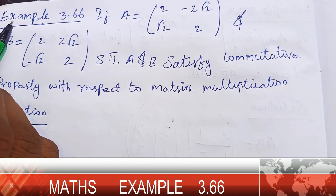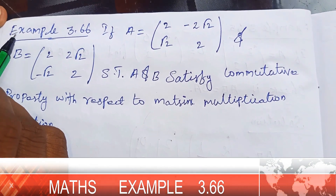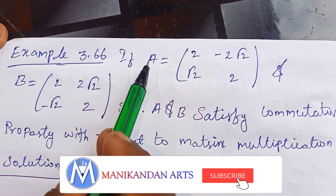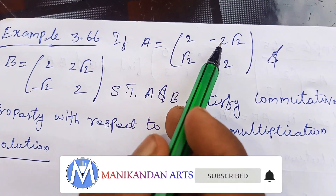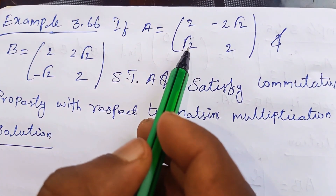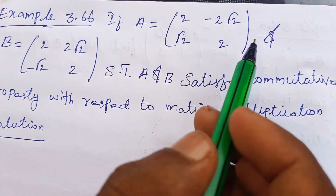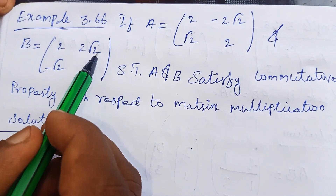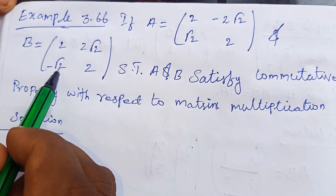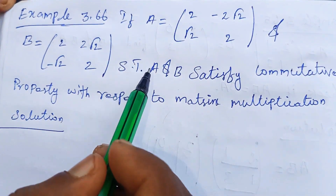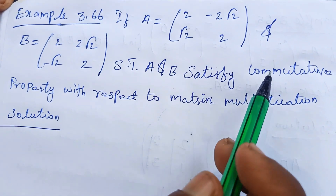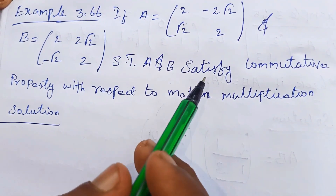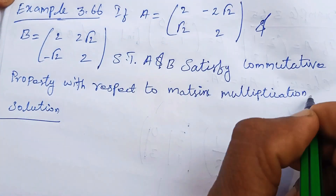Hi, this is a 10th standard matrix algebra example — Example 3.66. If A equals the matrix [2, -2√2; √2, 2] and B equals the matrix [2√2, -√2; 2, 2], show that A and B satisfy the commutative property with respect to matrix multiplication.